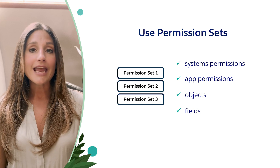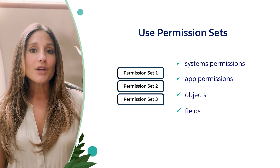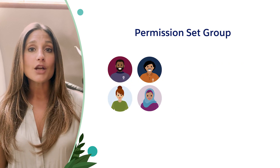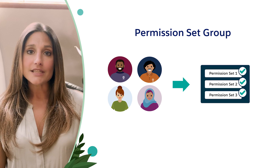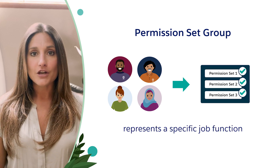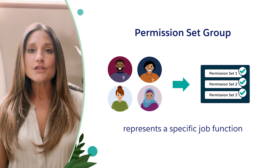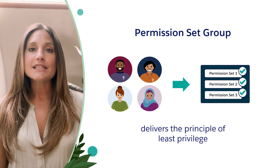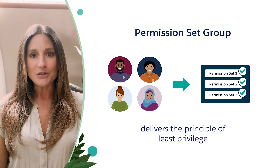A user can be assigned multiple permission sets. When using permission sets, we're able to create permission set groups that bundle permission sets together based on a task or tasks that users perform, representing a job function. This provides a more scalable and secure configuration while delivering the principle of least privilege — meaning not granting too much access to our users.